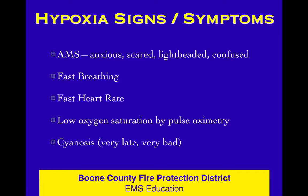Second sign: rapid breathing. If you're having trouble getting oxygen to the cells, your body will naturally have you breathe faster to try to get more oxygen in. Third sign: fast heart rate. If you're having trouble getting oxygen to the cells, your body will cause your heart to pump faster. These two — rapid breathing and fast heart rate — are compensatory mechanisms your body uses in response to sensing a drop in oxygen.